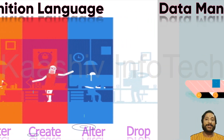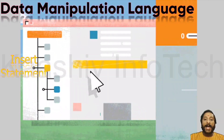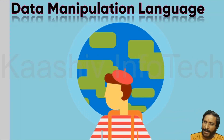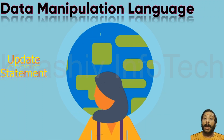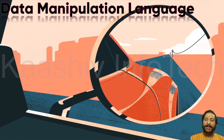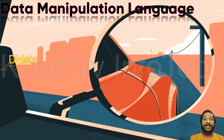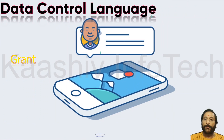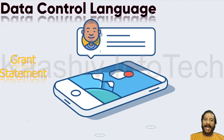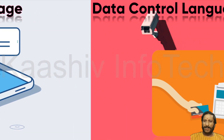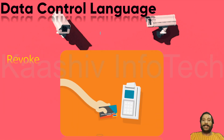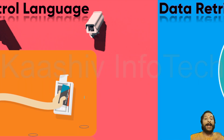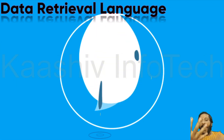The second is Data Manipulation Language, where you can INSERT data into the table, UPDATE the data, and DELETE the data. So this is how DML works. The next one is Data Control Language, where you control access. You use the GRANT statement to grant access to a user, and the REVOKE statement to remove access. These two — GRANT and REVOKE — constitute Data Control Language.